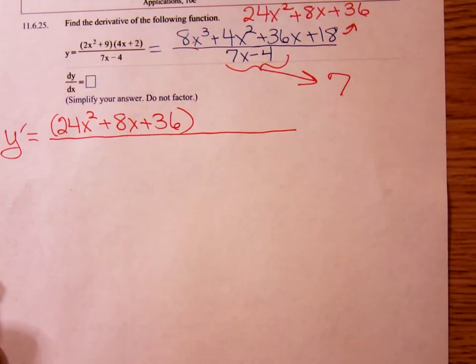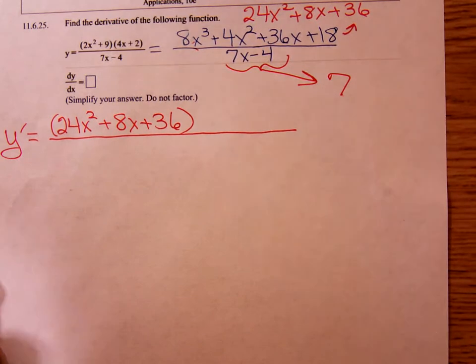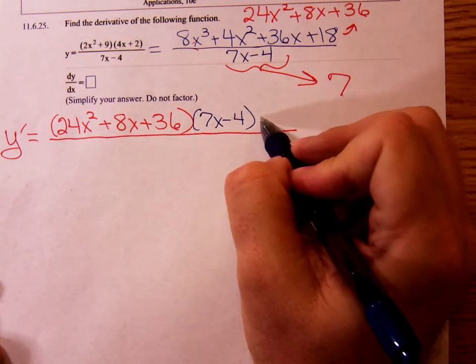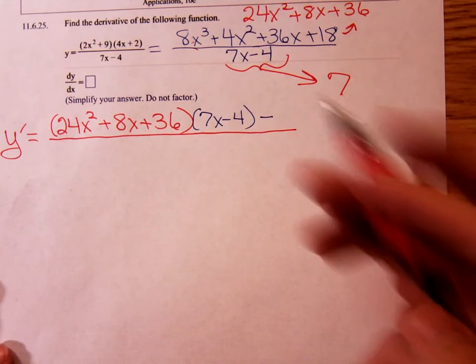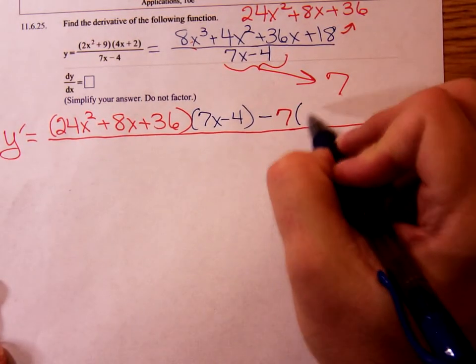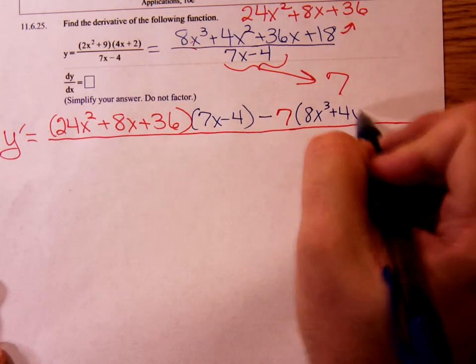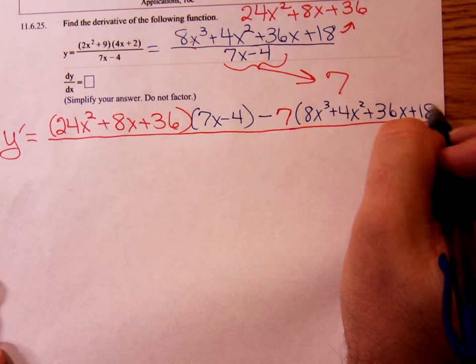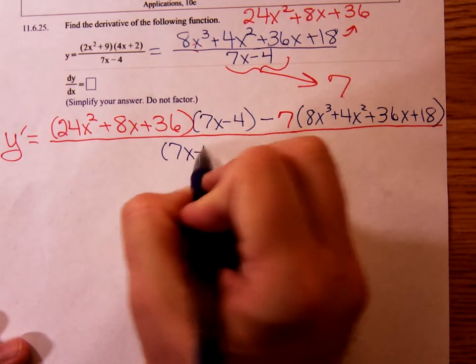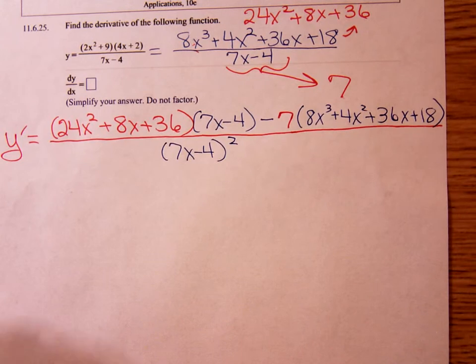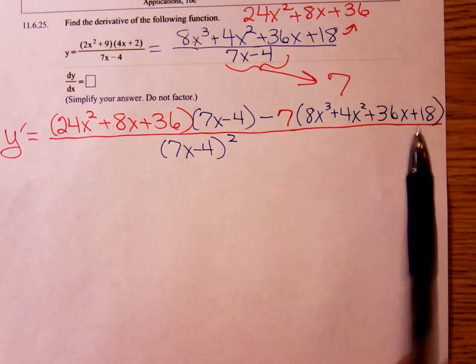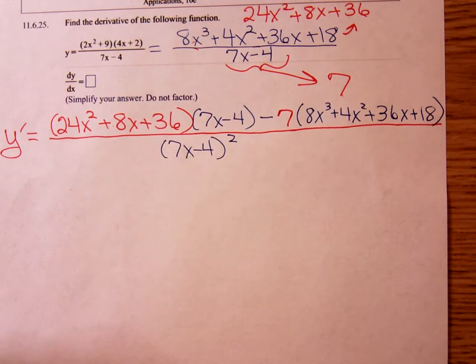So, it's the derivative of the first times the original denominator, 7x minus 4, minus the derivative of the denominator, 7, times all of that original numerator, 8x cubed plus 4x squared plus 36x plus 18. All over the denominator squared, 7x minus 4 quantity squared. It's the derivative of the first times the original second minus the derivative of the second function times the original first, all divided by the original denominator squared.